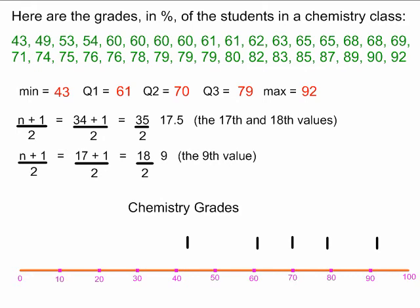Now all I have to do is connect them with my boxes and my whiskers. This is the first whisker. It connects 43 with 61. And now I'm going to build my box, connecting 61 through 70 to 79. And then I put my other whisker, which goes from 79 to 92.